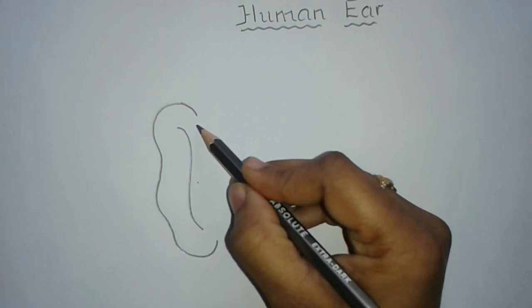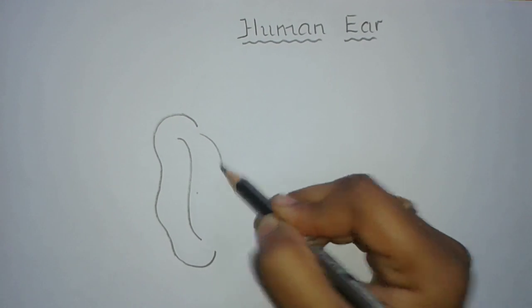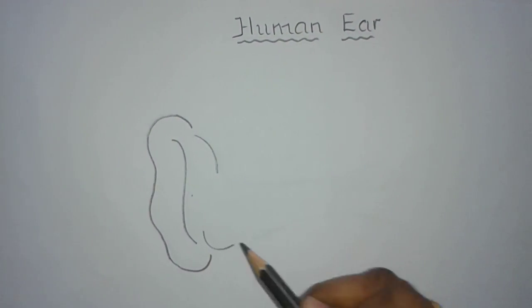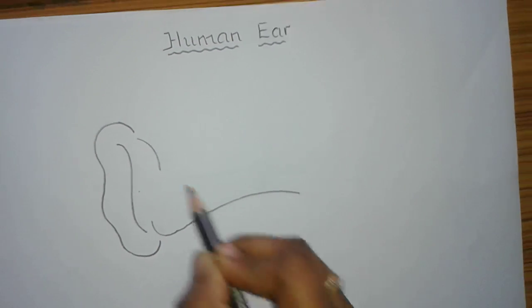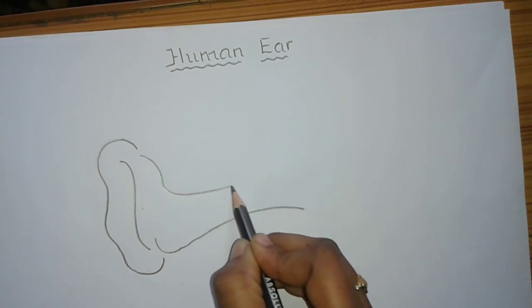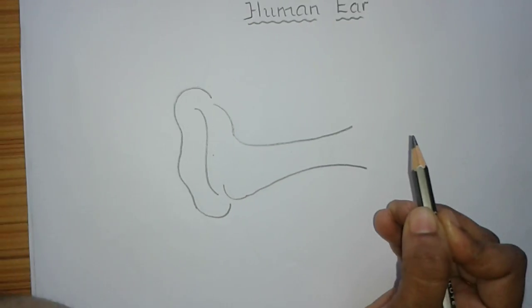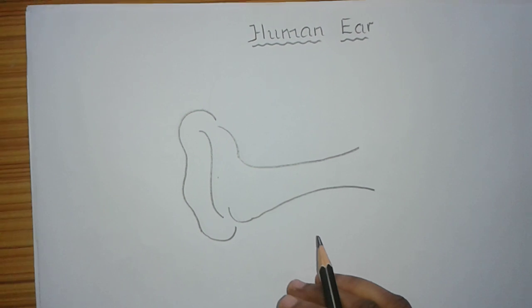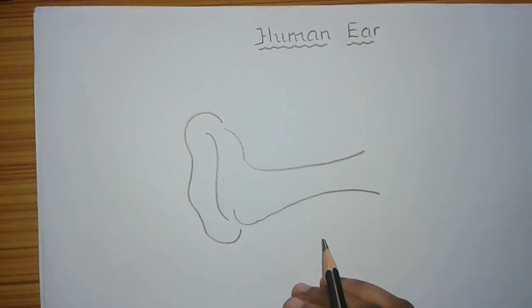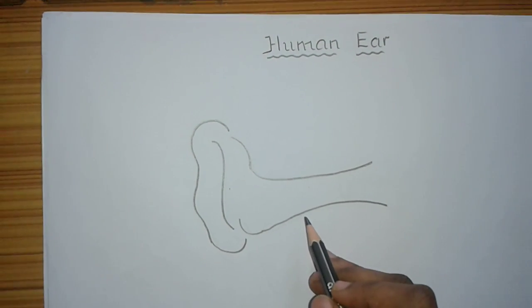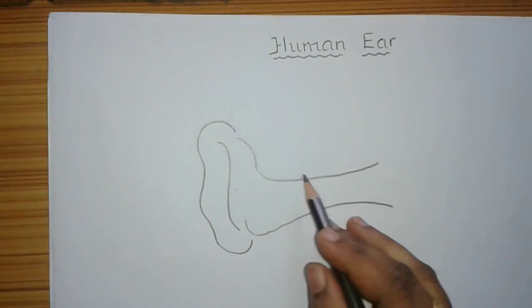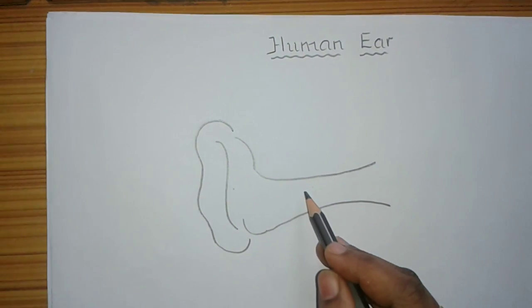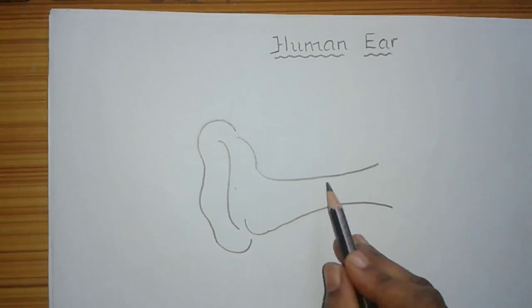Now draw the auditory canal. Just make a curved line like this. The auditory canal prevents dust. The hairs present in the auditory canal prevent dust particles from entering, and wax which is produced in the auditory canal entangles small organisms and dust.